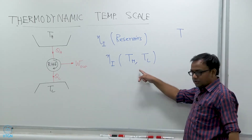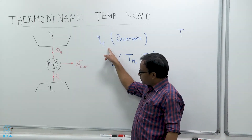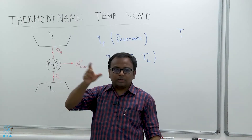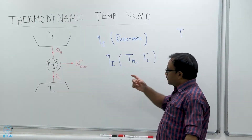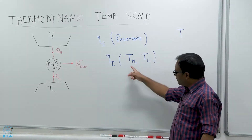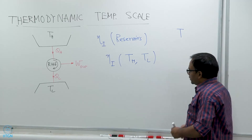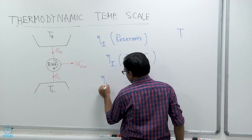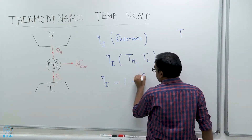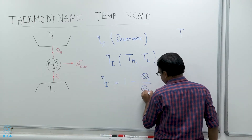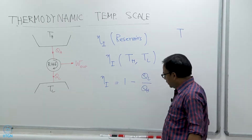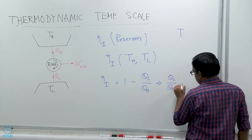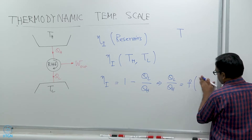Again, remember that this is a consequence of the fact that the efficiency of a reversible heat engine only depends on the reservoirs, and the only variables used to characterize the reservoirs are their temperatures. Which means the first-law efficiency has to be a function of the reservoir temperatures alone. So eta_1 equals 1 minus Q_L/Q_H, and this is a function of T_H and T_L only. Based on this, we can say that Q_L/Q_H is a function of T_H and T_L only.